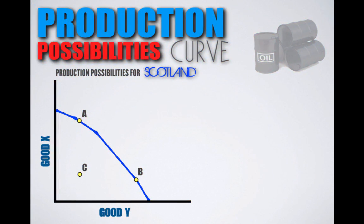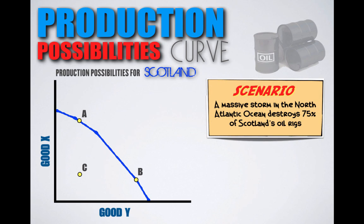Let's apply these principles with examples. A massive storm destroys 75% of Scotland's oil rigs. Oil is a resource, and with fewer resources available, Scotland will experience economic contraction — its PPC shifts inward, meaning it cannot produce as many goods as it used to.